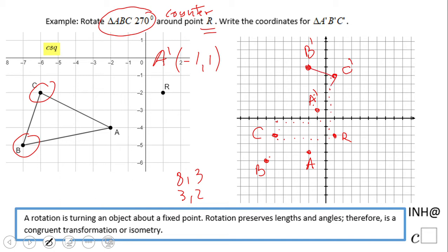And you can see now the new triangle is rotated 270 degrees counterclockwise. B prime will be (-2, 6). C prime will be (1, 5).